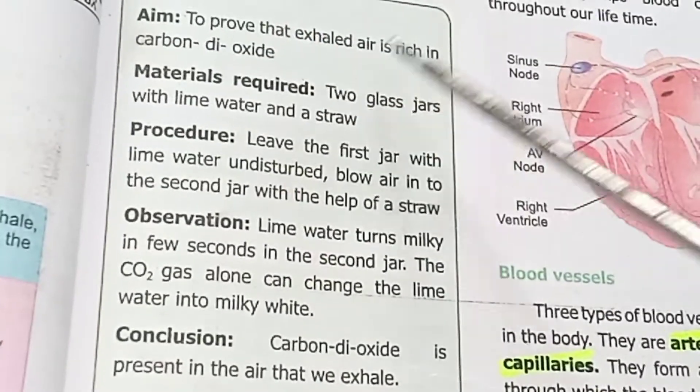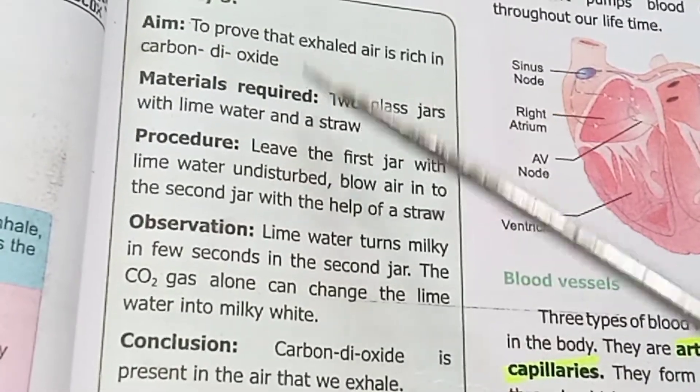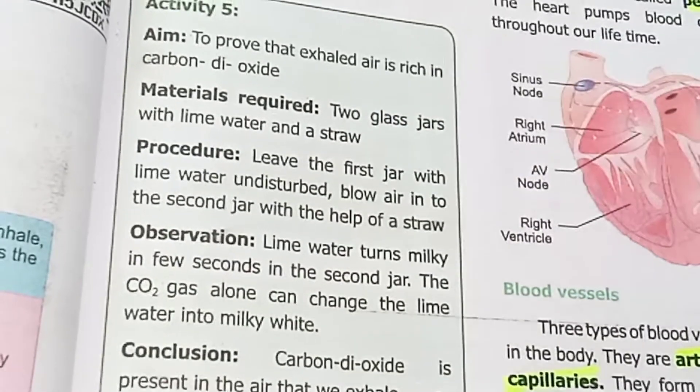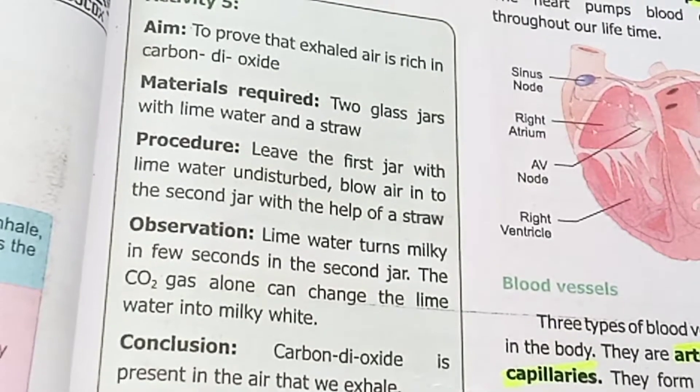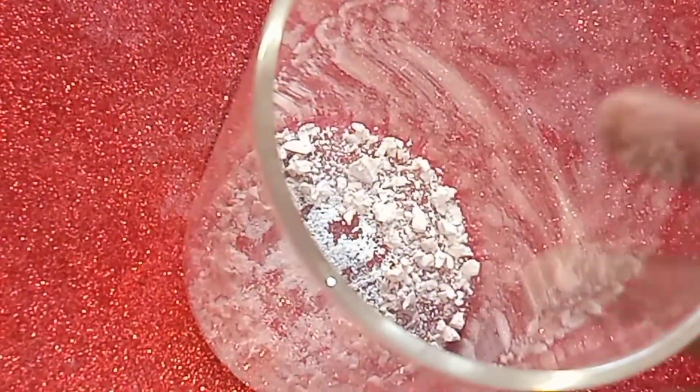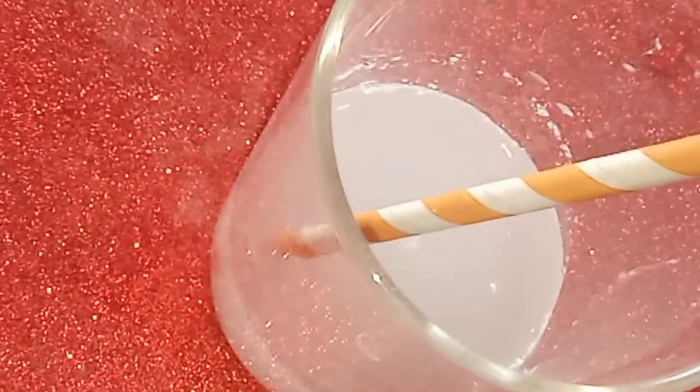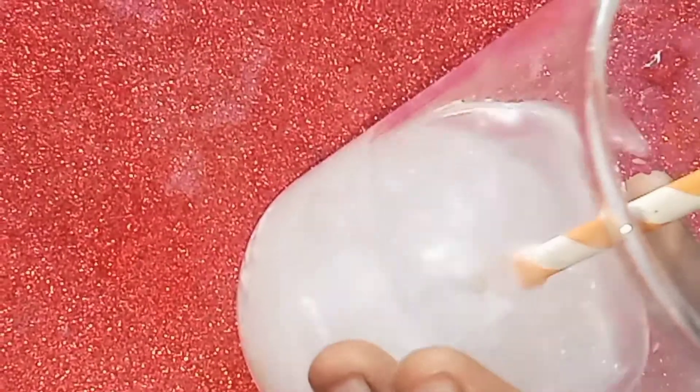Activity 5: To prove that exhaled air is rich in carbon dioxide. We need to prove that the air we breathe out contains CO2. Take one bowl and add lime water. Then blow through a straw into the lime water. Observe how the lime water changes — it turns milky. This proves that the air we exhale contains carbon dioxide.